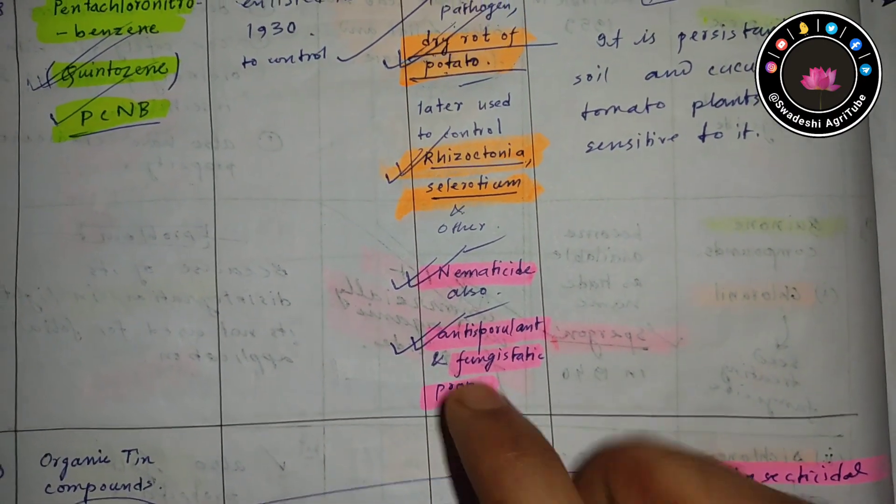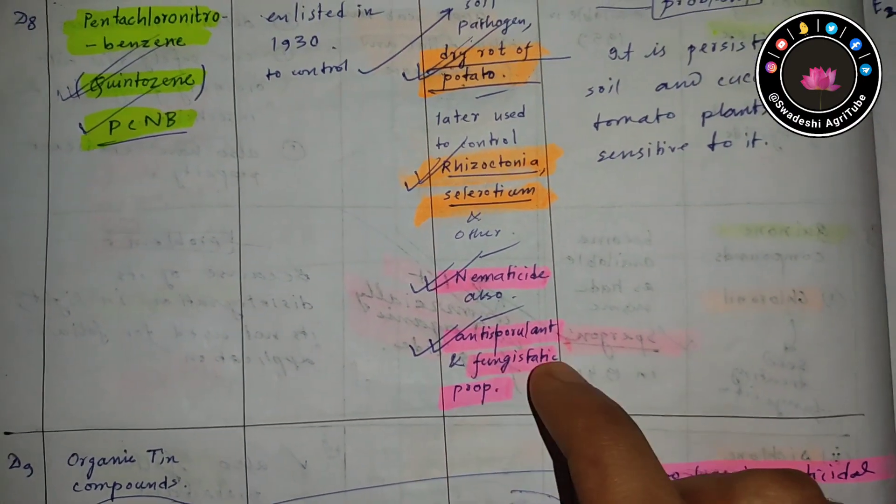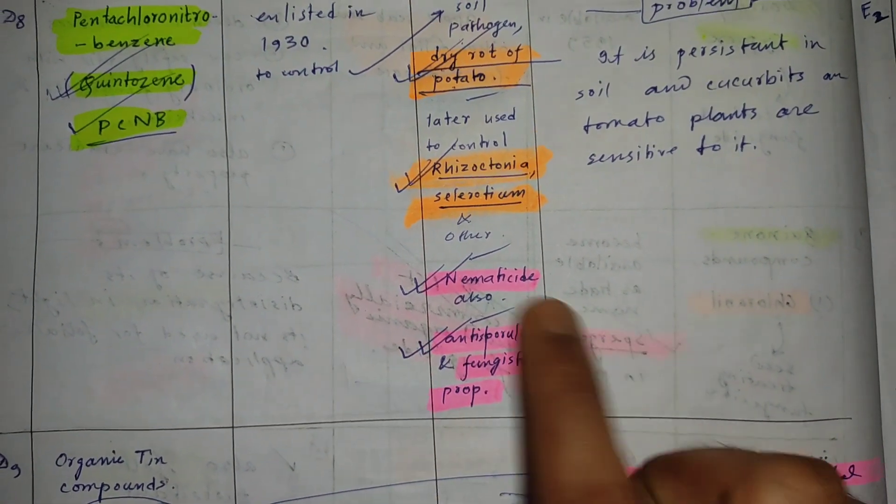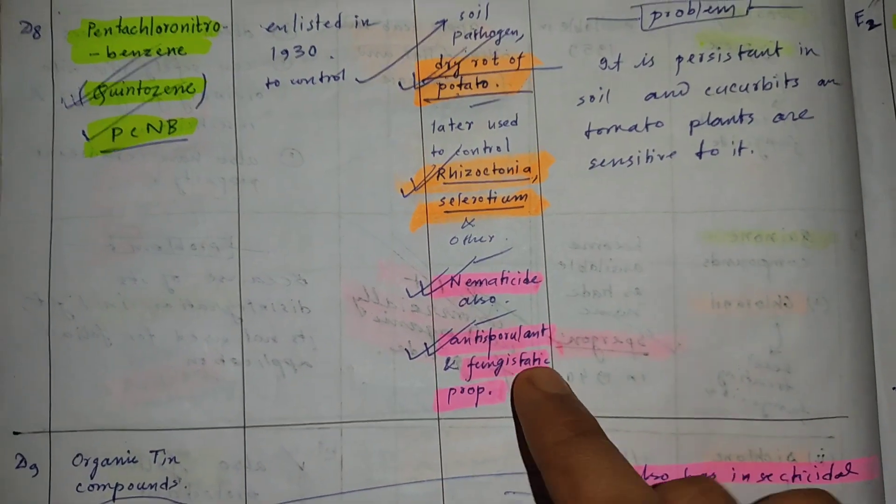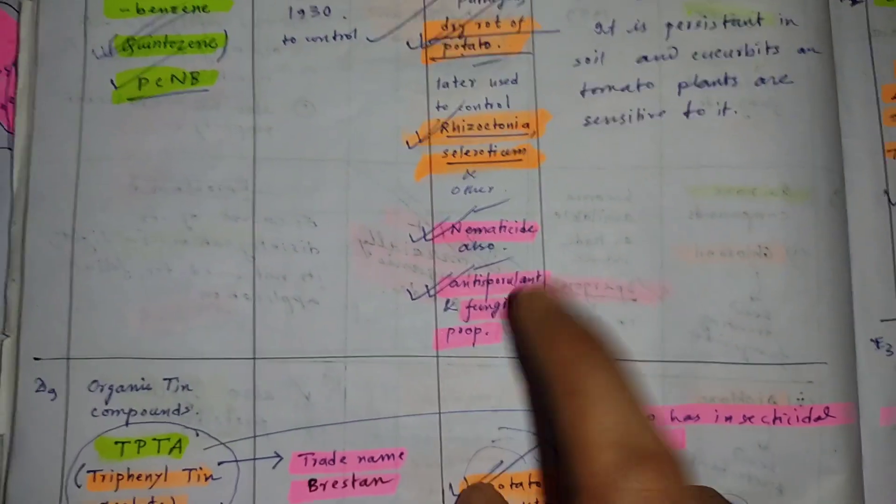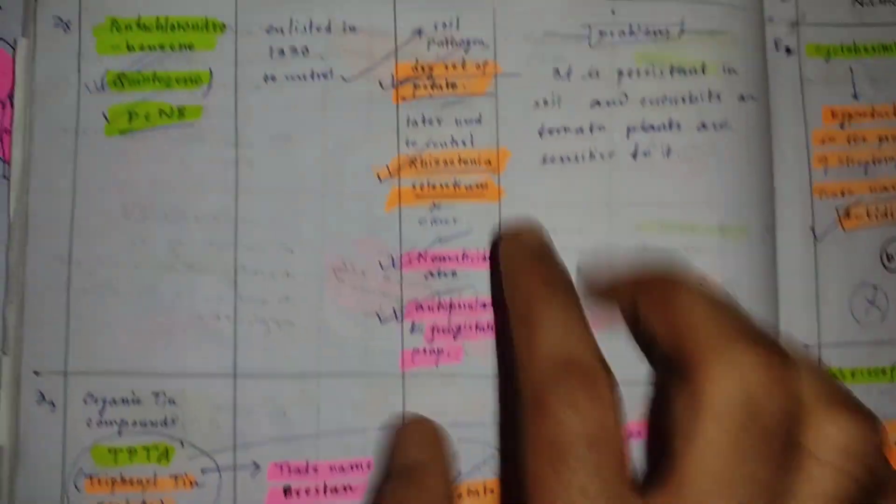Actually, it is not a fungicide—it rather has antisporulant and fungistatic properties. We have already discussed the difference between fungicide, antisporulant, and fungistatic. Just go to the first video, the first part of this fungicide classification.